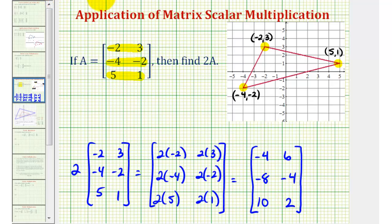Now we'll compare the red triangle to the triangle using the vertices negative 4, 6, negative 8, negative 4, and 10, 2.